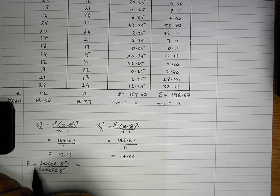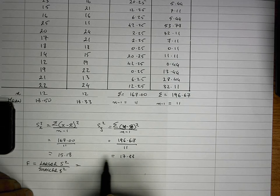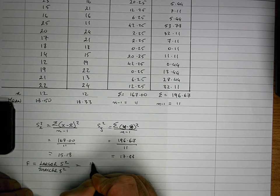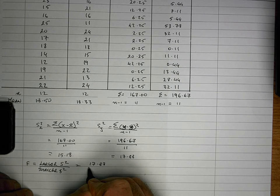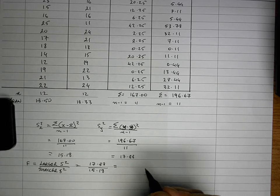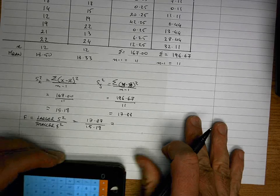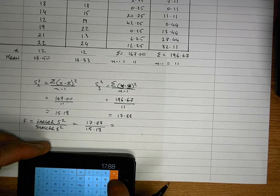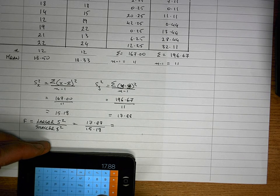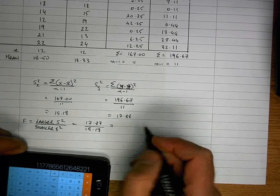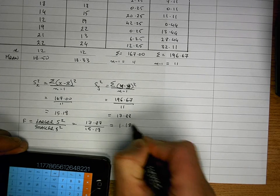And my F test then is in order to calculate the F statistic. I just simply take the larger variance and divide it by the smaller variance. So that's going to be 17.88 divided by 15.18. Which is equal to, so let's work that out. 15.18. And that gives us a result here of 1.18 rounded.